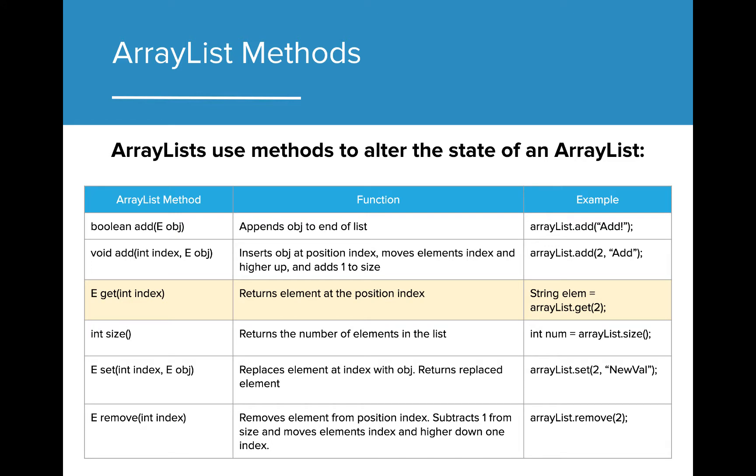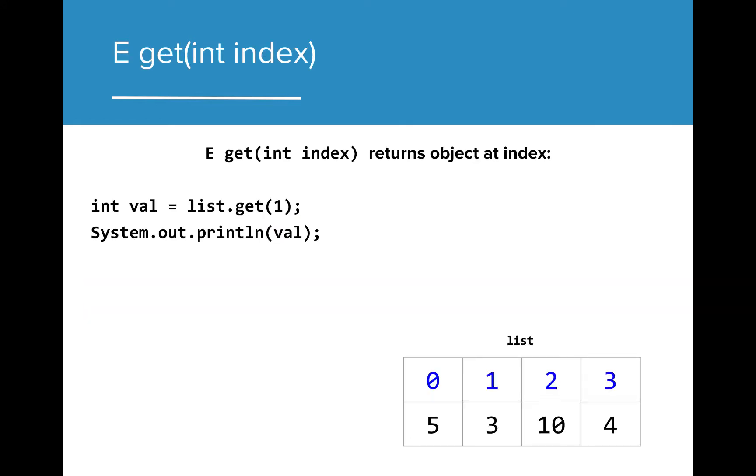The next method we're going to look at is the get method. Similar to indexing arrays, the get method allows us to access the value of an array at a particular index by returning that value to the program. In this example, the variable val is being assigned the value of list index 1, which in this case is 3.